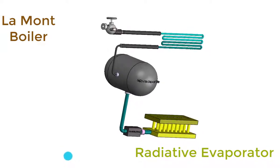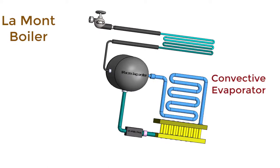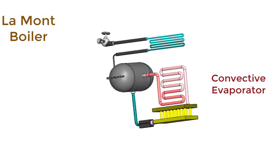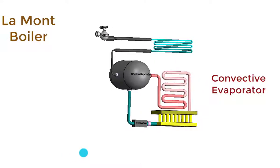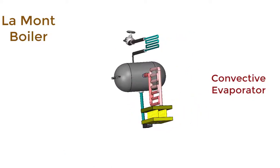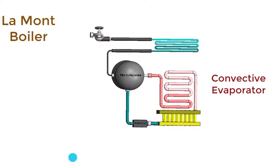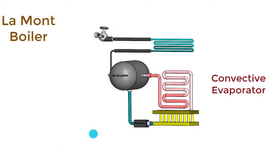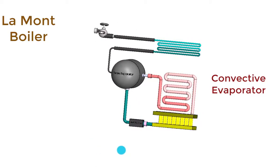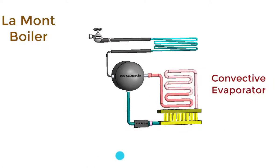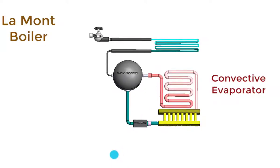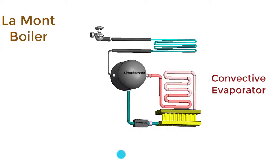After radiant evaporation, it moves to the convective evaporator. Water and steam mixture coming out of the radiant evaporator enters the convective evaporator tubes. In the radiant evaporator, some of the water is converted to steam, so the mixture of water and steam enters into the convective evaporator. The hot flue gases passing over the evaporator tubes transfer a large portion of heat to the water by convection. During this time, the water-steam mixture passing through the convective evaporator is completely converted to steam, and that steam enters into the steam separating drum again.